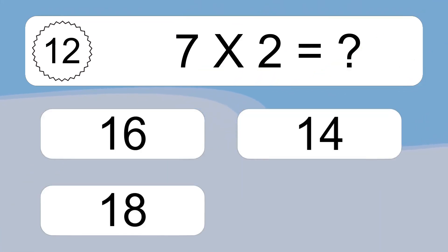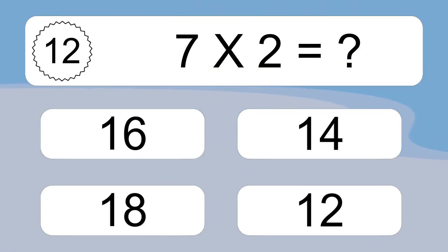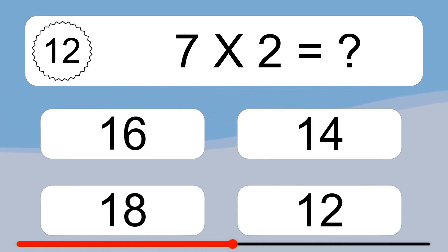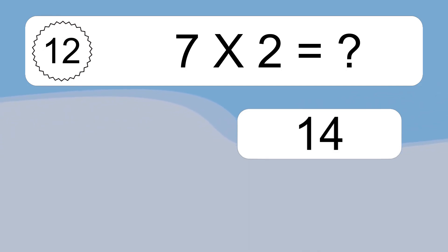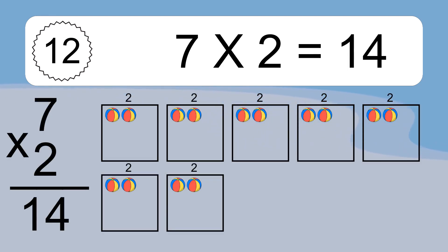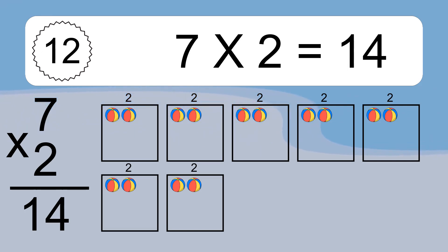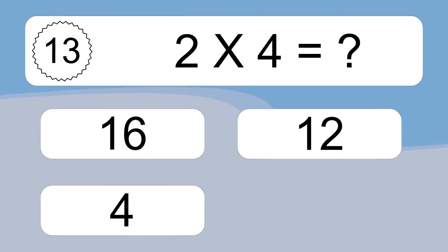Seven times two equals what? Seven times two equals fourteen. We have seven boxes, and each box has two colorful balls inside. If you count all the balls in all the boxes together, you will have seven times two balls. This equals fourteen balls.